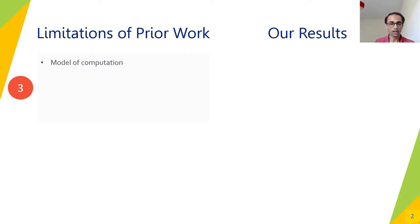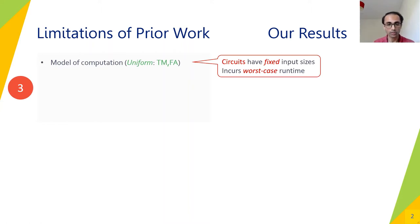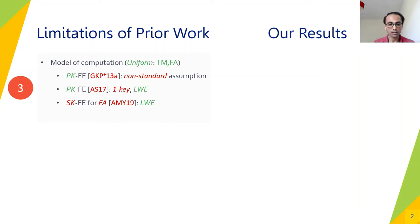The next aspect of our work is to support more general models of computation. We want to support uniform models like Turing machines and finite automata, owing to the inherent drawbacks of non-uniform models like circuits, which have fixed input sizes and incur worst-case runtime. There is a public key FE scheme for Turing machines from Goldwasser et al. 2013 relying on non-standard assumptions; a public key FE scheme for finite automata and Turing machines from LWE by Agrawal and Singh, but only single-key secure; and a secret-key FE for finite automata from MY19 relying on LWE. All these constructions are only secure in the bounded collusion model.